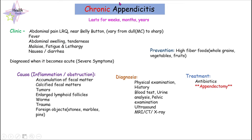This condition will last for some period of time being chronic, and at some point these symptoms will become more severe. In that case it becomes acute appendicitis with severe symptoms, and the patient will come for medical help. Through anamnesis and history, we can see that the patient had chronic appendicitis for a longer period of time.